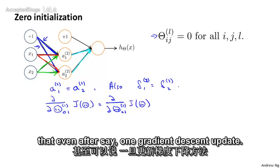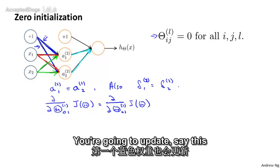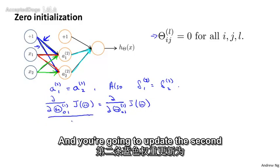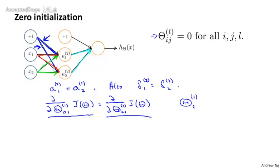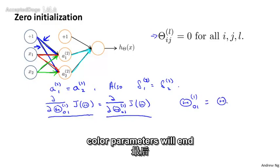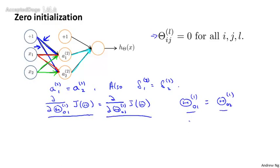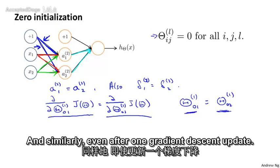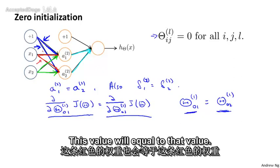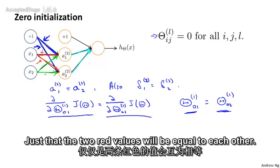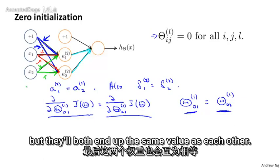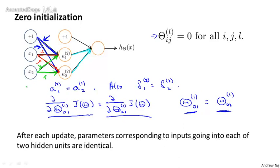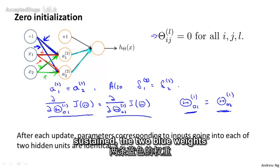What this means is that even after one gradient descent update, you're going to update this first blue weight with learning rate times this, and the second blue weight with some learning rate times this. But those two blue color parameters will end up the same as each other — some non-zero value, but this value will equal that value. Similarly, even after one gradient descent update, the two red values will equal each other, and the two green weights will both change but end up the same value as each other. After each update, the parameters corresponding to the inputs going to each of the two hidden units remain identical.